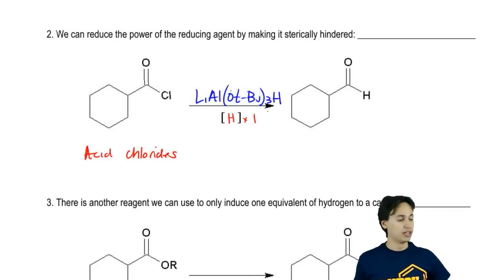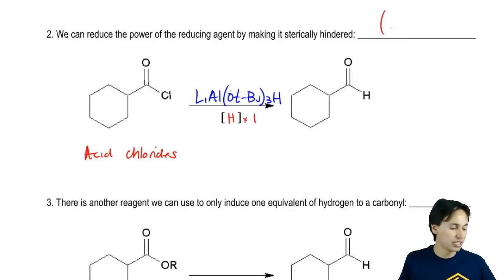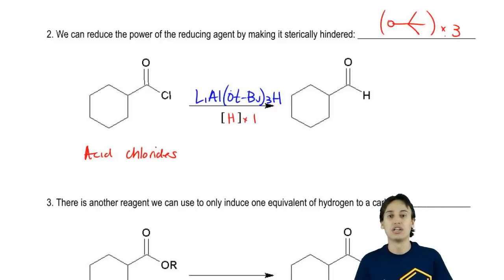What I want you guys to draw in this blank up here is just that what's the thing that's making it hindered? Well, we've got these O-t-butyl groups times three. We're adding those to the LAH to make it a lot less reactive.